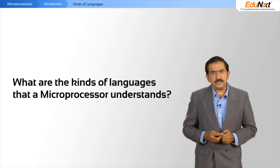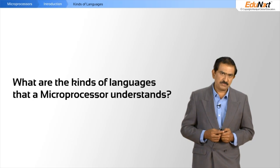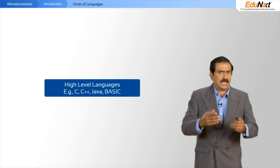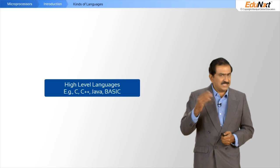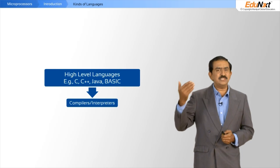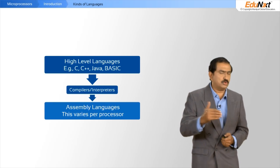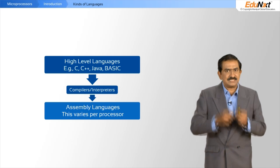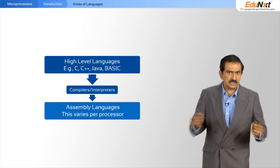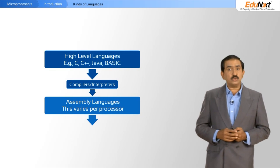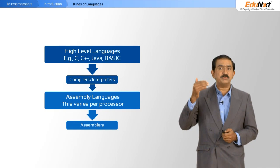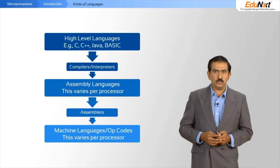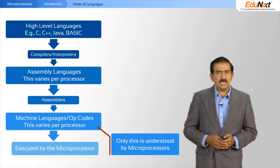The last piece I would like to cover is the kinds of languages a processor can understand. At the top you have high-level languages such as C, C++, and Java. But these are not something the processor can understand directly. You need to compile or interpret them, which brings you down to assembly level languages. Assembly level languages are very processor specific — the 8086 has its own assembly language that cannot be understood by processors from other manufacturers. The assembly language also cannot be understood by the processor directly; it must be assembled by an assembler to produce machine code or op codes, and it is these that the processor understands.